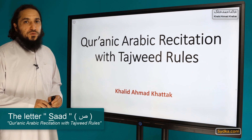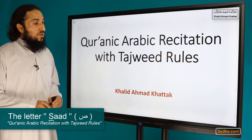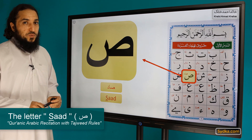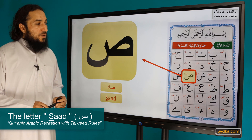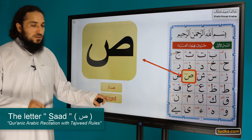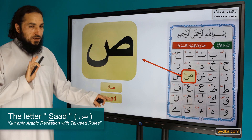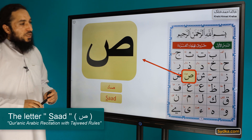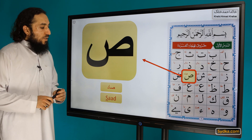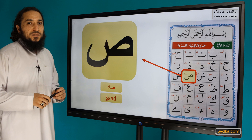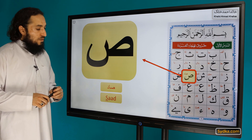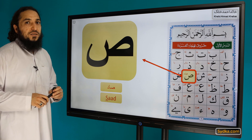Bismillahirrahmanirrahim, Assalamu alaikum warahmatullahi wabarakatuh. Welcome back to another session of Quranic Arabic recitation with the Tajweed rules. In this session we will be studying another letter of the Arabic alphabet. It has a bouncing effect at the end, which is one of the properties we will explain later. The sound is: Saad, Saad, Saad.